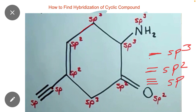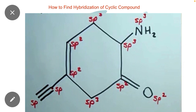As you can see, no double bond or triple bond is present at this carbon, so it has sp3 hybridization. This carbon also has no double bond or triple bond, so its hybridization will also be sp3. Here at NH2, no double bond is present, so its hybridization will also be sp3.